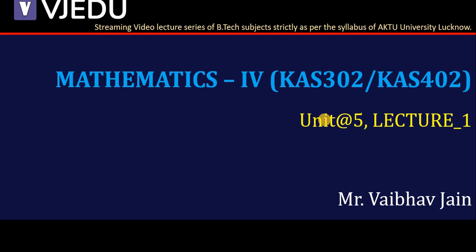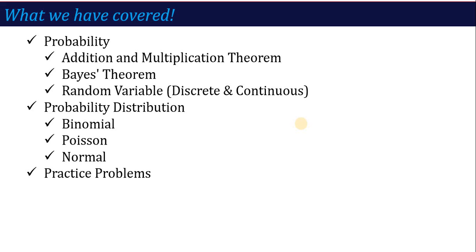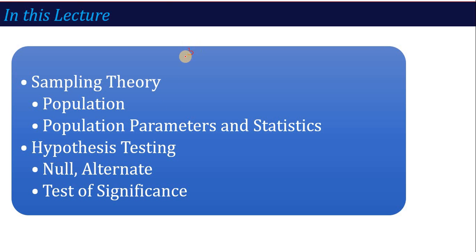Here we are in lecture number 1 of unit number 5. In the previous lecture we finished unit 4 where we talked about probability related terms, probability theorem, addition and multiplication theorem, Bayes theorem, continuous and random variable distribution whether discrete or continuous, and distribution categories - binomial distribution, normal distribution and Poisson distribution. These topics are the most important plus Bayes theorem, where most questions appear.